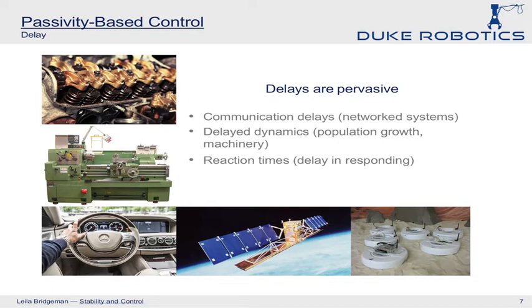But passivity-based control is not a magic bullet because there are many things that can destroy passivity — making the system behave as if it were an active element putting energy into the system. One of those things is delays. Delays are pervasive and of growing importance because we're trying to implement controllers in the cloud and there are inevitably going to be communication delays. Also, if we want humans in the loop and humans and robots interacting, we have a certain finite reaction time which introduces a delay. And of course there are also systems like population growth that have delays inherent to their dynamics.